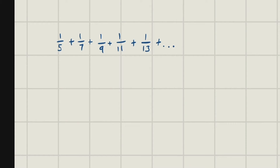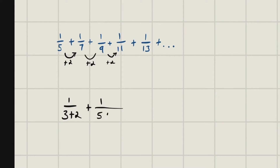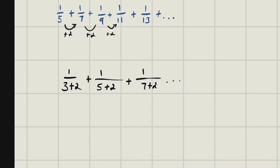First thing we need to do is write this as a series, because working like this is a little more difficult. I like to rewrite everything and just see what kind of patterns I see. We notice there's a plus two happening in the denominators every time. So if we rewrite each fraction, 3+2, 5+2, 7+2 — we can see the pattern forming.